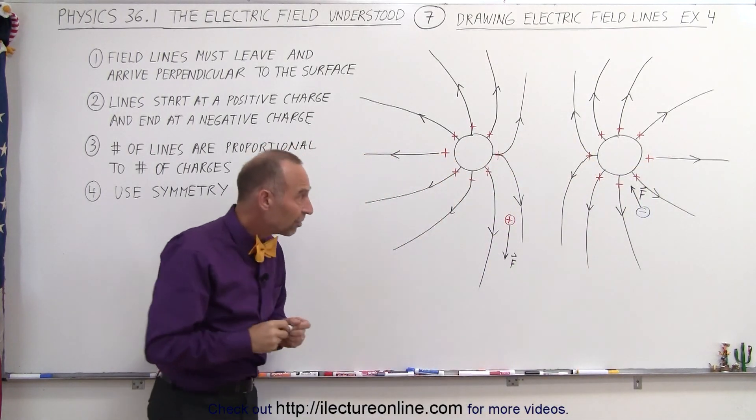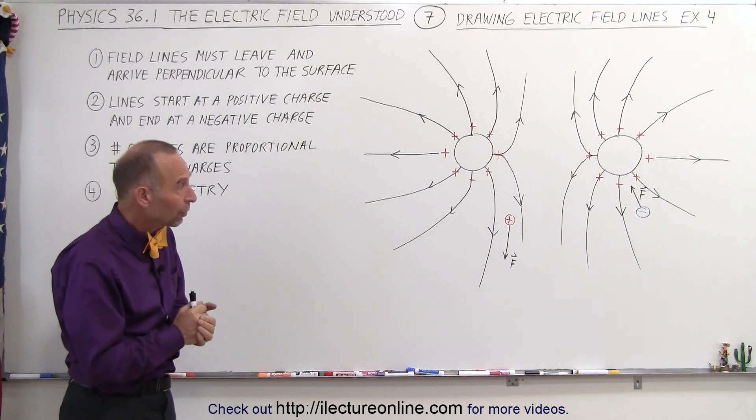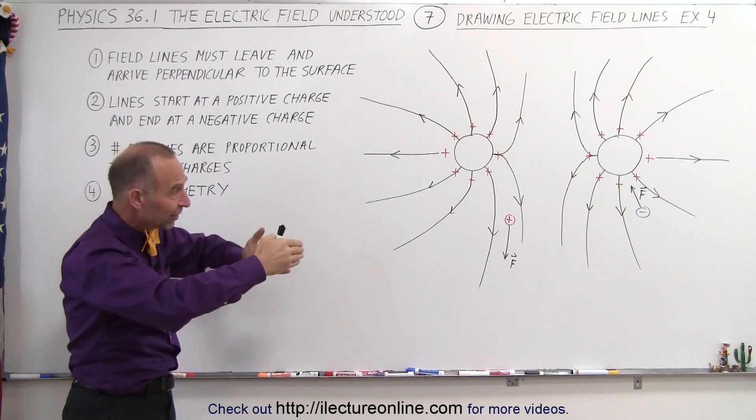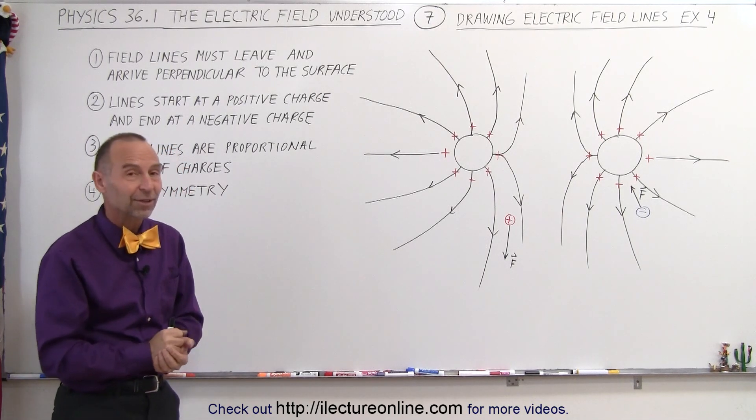There we go. And so that's how we draw the electric field lines when we have positive charge on both objects showing electric field lines that seem to push away from each other because of repulsive forces. That's how it's done.